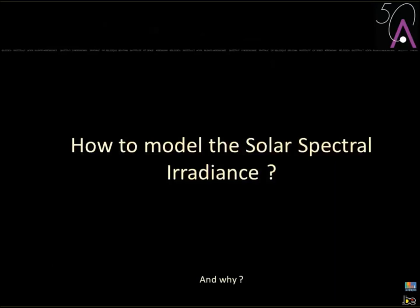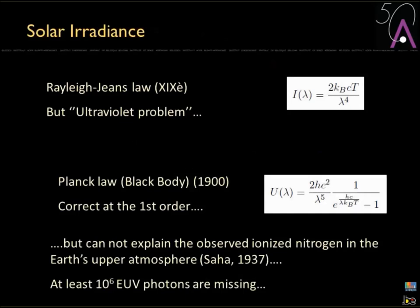Going back in history: you start with the Rayleigh-Jeans law, which was a very good approximation at first, especially for the visible part. But if you go down to very low wavelengths you have the ultraviolet catastrophe, where the irradiance tends to infinity. That was a real problem. Then you have the Planck law — the black body law — which is actually correct.